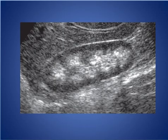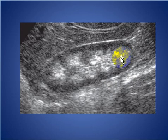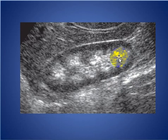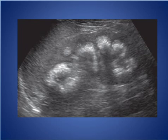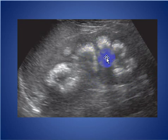Here is another patient with medullary nephrocalcinosis. We see increased echogenicity of the medulla with a rim-like pattern in the medullary pyramids. Several of them show shadowing calculi. Here are more severe cases of medullary nephrocalcinosis, showing medullary calcification with shadowing in patients with renal tubular acidosis.